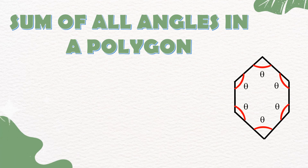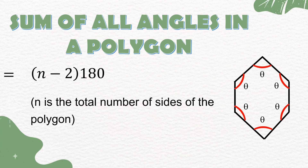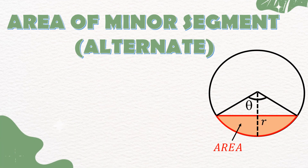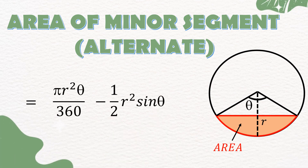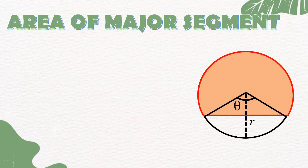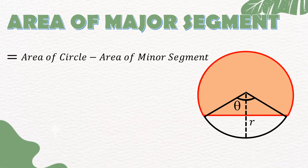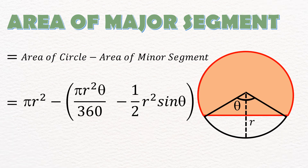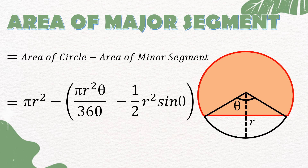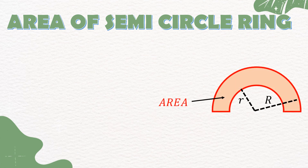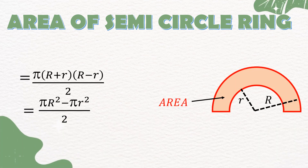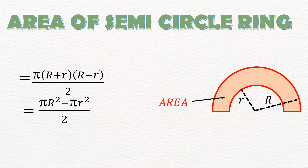Sum of all angles in a polygon is equal to (n − 2) × 180°, where n is the total number of sides of the polygon. Area of minor segment is equal to (θ/360) × πr² − (1/2)r² sin θ. Area of major segment is equal to area of circle minus area of minor segment, which is also equal to πr² − [(θ/360) × πr² − (1/2)r² sin θ]. Area of semicircle ring is equal to π(R + r)(R − r)/2, which is also equal to (πR² − πr²)/2.